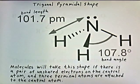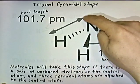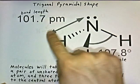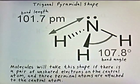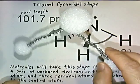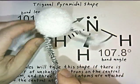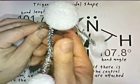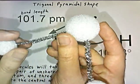Molecules will take this trigonal pyramidal shape if there's a pair of unshared electrons on the central atom and three terminal atoms attached to it. A diagram gives a better idea of the three-dimensional shape.